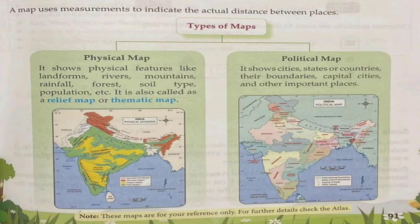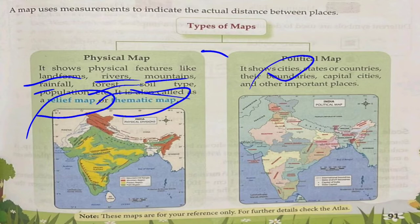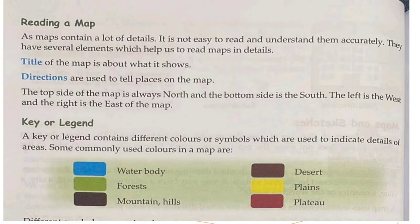A map uses measurements to indicate the actual distance between places. There are two types of maps: Physical maps and Political maps. A physical map shows physical features like landforms, rivers, mountains, rainfall, forests, soil, and population — also called a relief map or thematic map. A political map shows cities, states, country boundaries, capitals, and other important places.